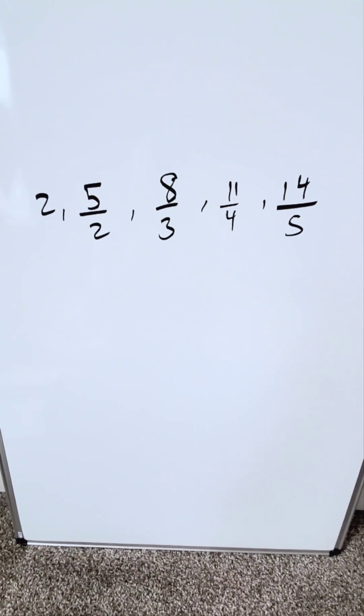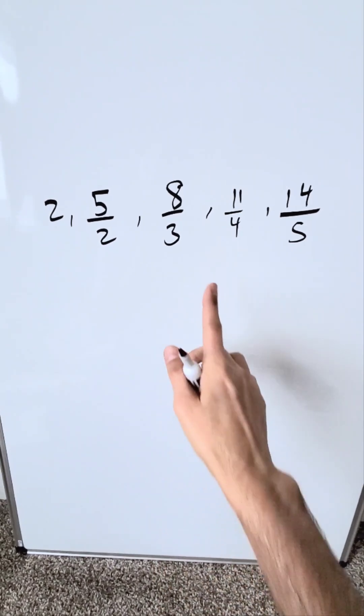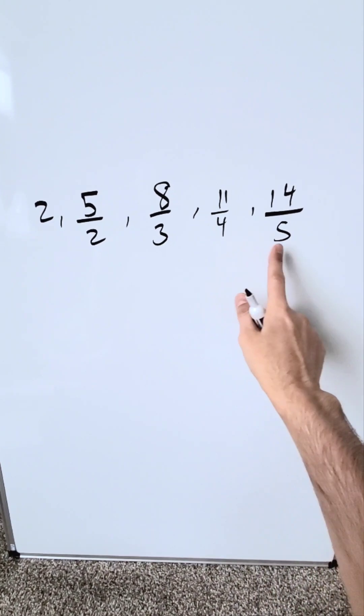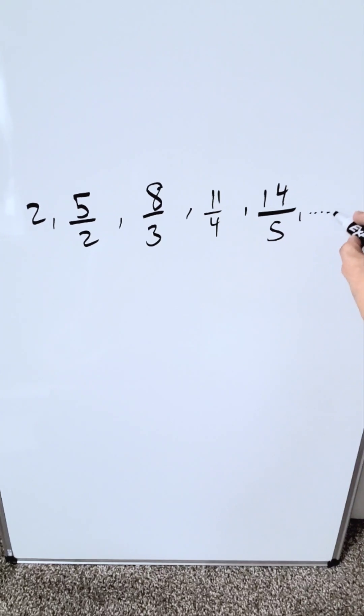Look over here at this sequence. I have 2, 5 over 2, 8 over 3, 11 over 4, 14 over 5, and it can keep going.